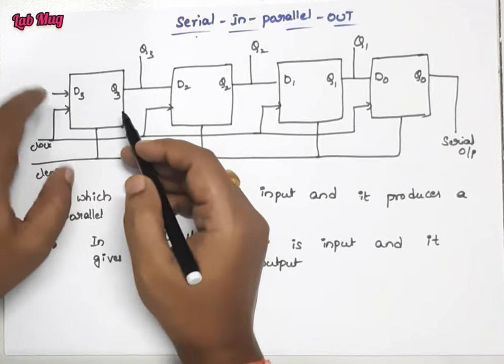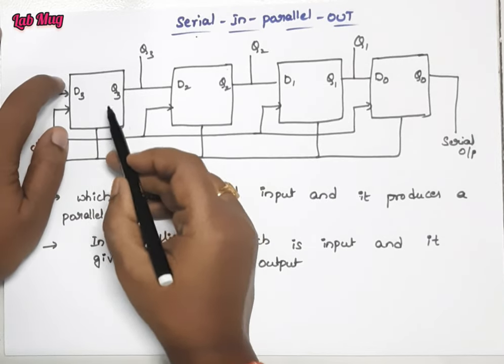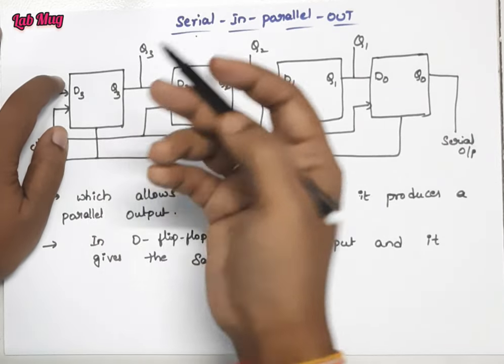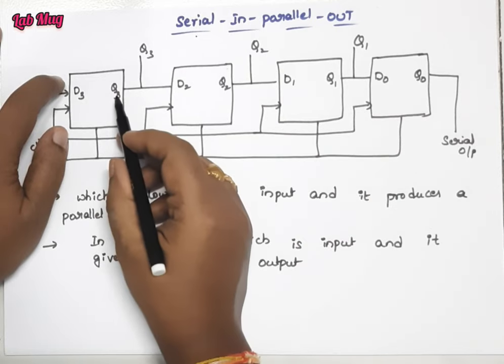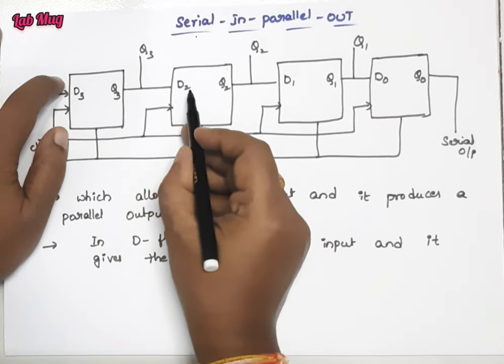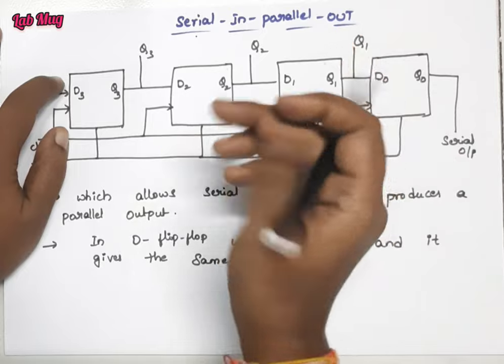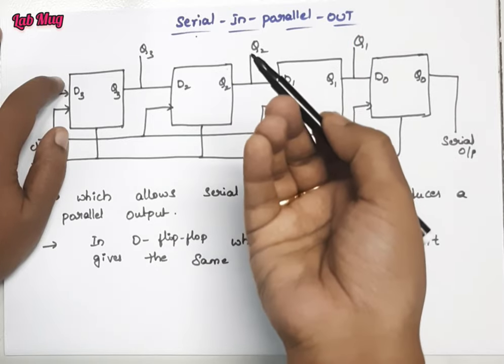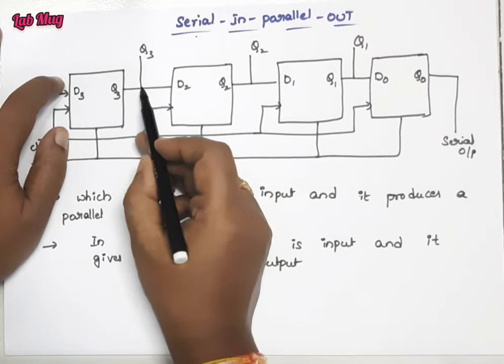Whenever the processing of the first flip-flop, we are getting one output value. That output value is going to the D2 as input, but in that same situation Q3 is outgoing as output.